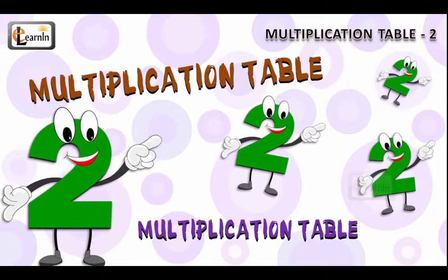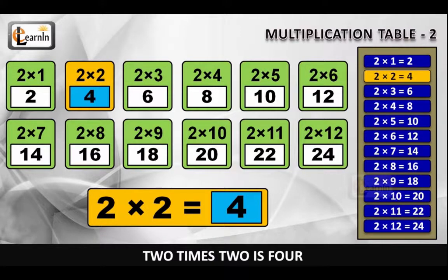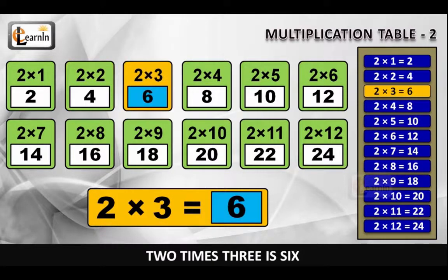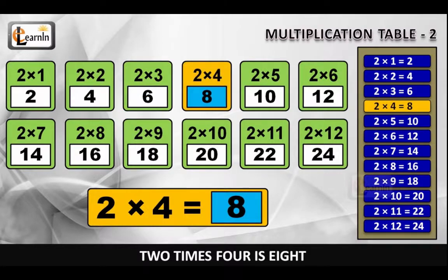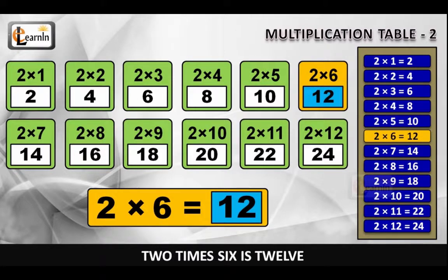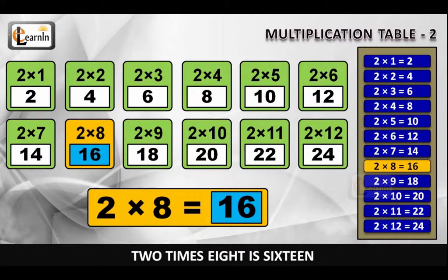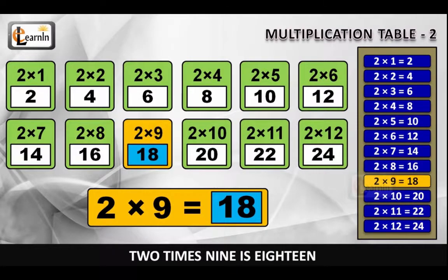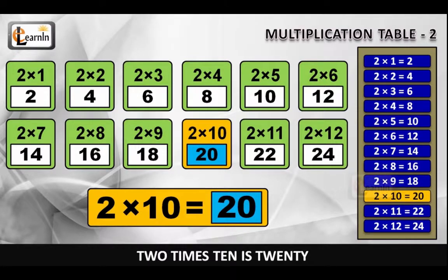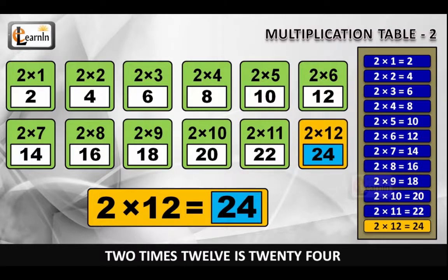Let's sing it one more time. 2 x 1 is 2, 2 x 2 is 4, 2 x 3 is 6, 2 x 4 is 8, 2 x 5 is 10, 2 x 6 is 12, 2 x 7 is 14, 2 x 8 is 16, 2 x 9 is 18, 2 x 10 is 20, 2 x 11 is 22, 2 x 12 is 24.